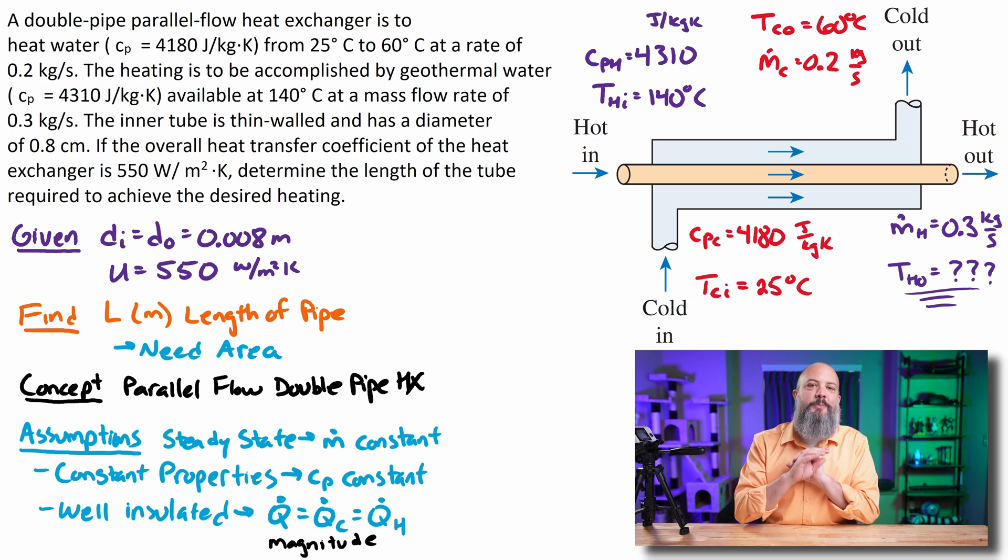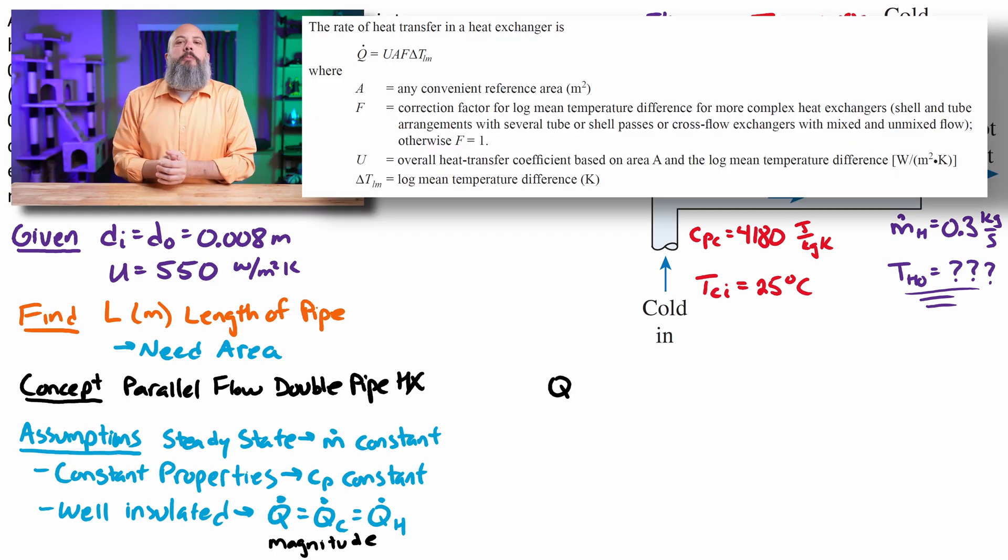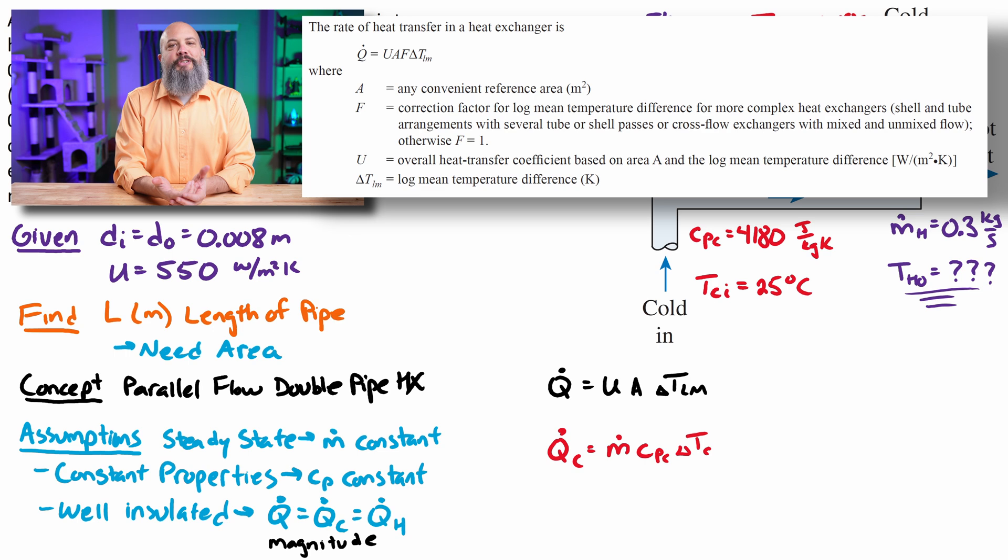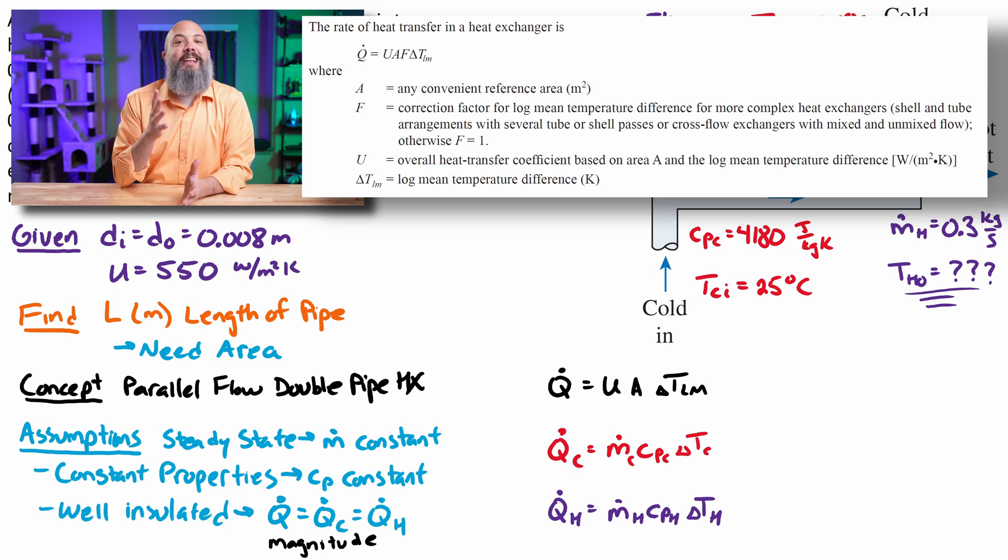So we're just going to assume Q dot C is equal to Q dot H. The main equation for this problem is going to be Q dot equals U A delta T_LM. U is the overall heat transfer coefficient, A the surface area, and delta T_LM the log mean temperature difference. But there's two other equations that I'm also going to have to use for Q, the rate of heat transfer. That is, the amount of heat gained by the cold fluid, M dot CP delta T, is equal to the amount of heat lost by the hot fluid, M dot CP delta T for the hot fluid. All three of these Q terms are exactly the same.